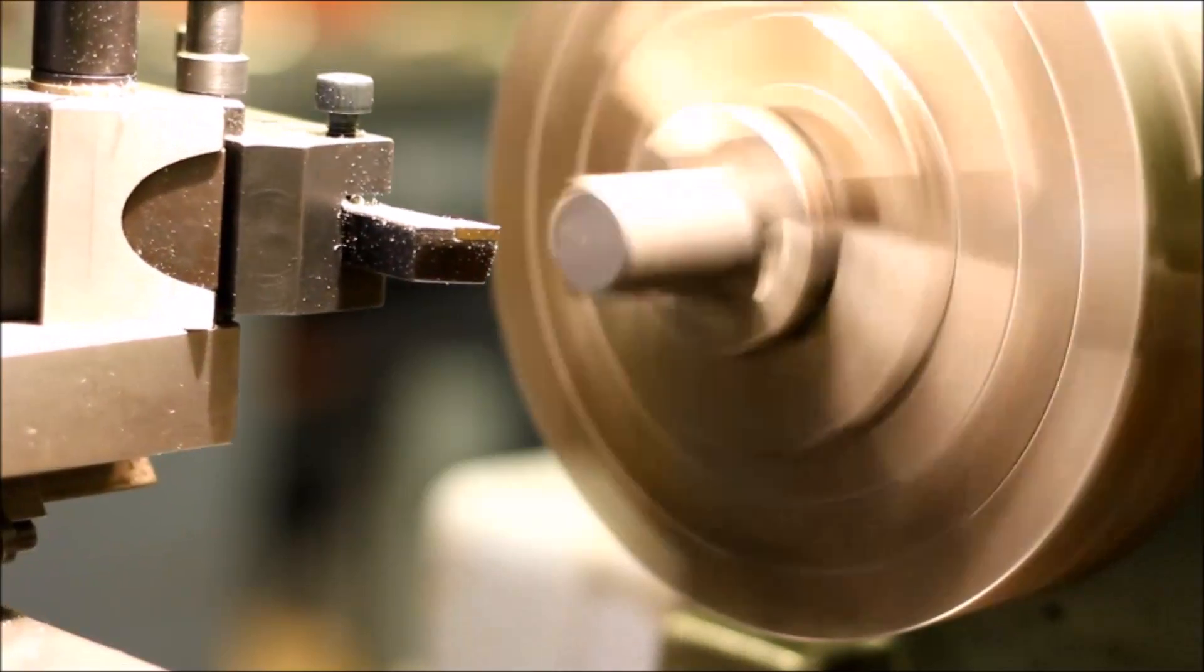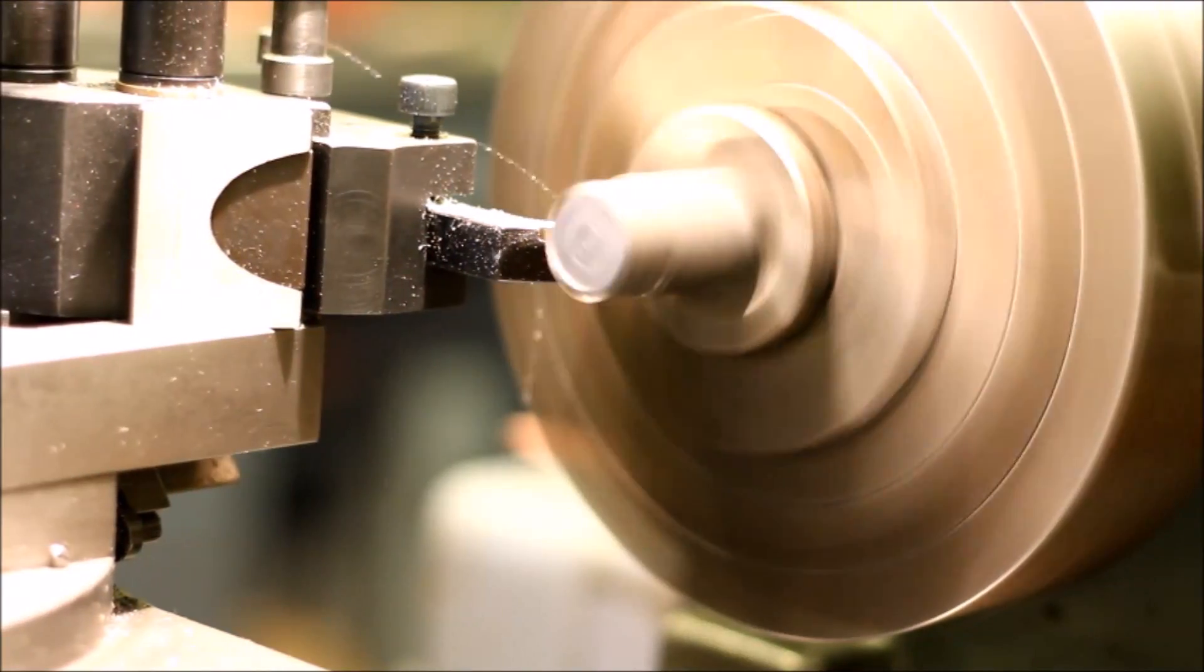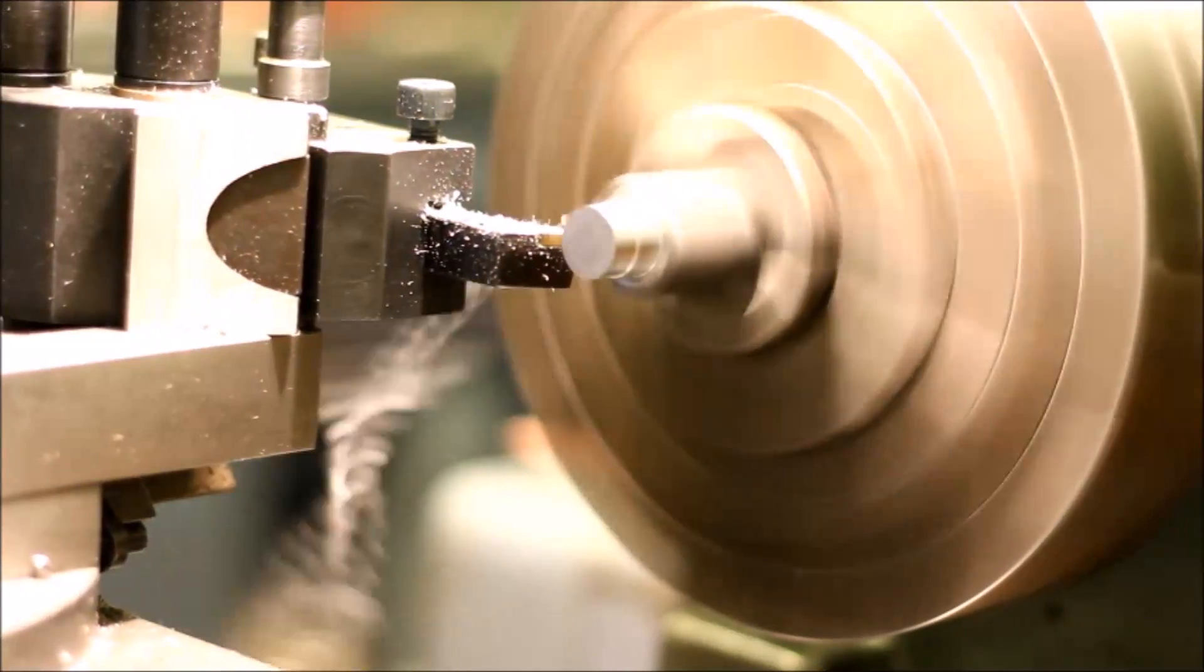Now it's time for the end, the internal and external tool holder. I placed a square piece in the 4 jaw chuck and turned down both ends to 12mm.